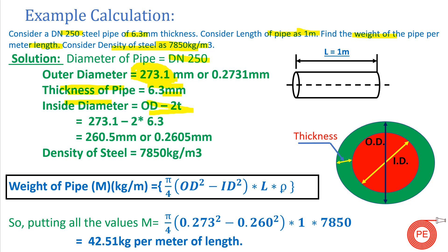Thickness of the pipe is 6.3 mm. To calculate inside diameter: ID = OD − 2t = 273.1 − 2(6.3) = 260.5 mm, which is 0.2605 m. Converting OD to meters: 0.2731 m. Putting all values into the formula: (π/4) × (0.273² − 0.260²) × 1 × 7850, the result is approximately 42.51 kg per meter of length.